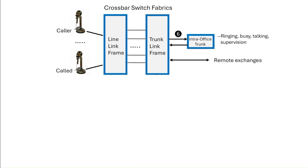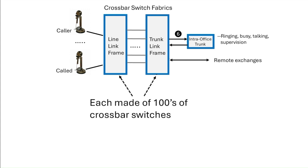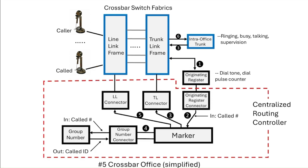Central to the number five exchange are two standalone switching fabrics, each made of hundreds of switches. One is called the line-link frame, and the other is the trunk-link frame. The line-link portion connects to the subscribers, and the trunk-link connects to internal trunks, remote exchanges, and other equipment. But what controls the routing through the fabrics? All of this is a routing controller. Central to this is a brilliantly engineered device called the marker — it is the brains of the outfit. There are two different marker types per exchange; their operations are combined here to simplify the diagram.